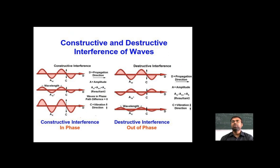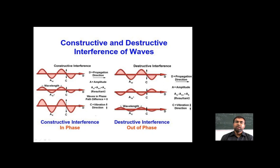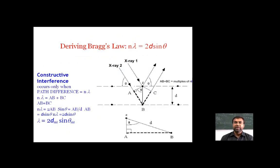Before moving on, we need to define interference. There are two types of wave interference: constructive and destructive interference. The propagation direction and amplitude illustrate both types — constructive interference and destructive interference can be seen in the corresponding waveforms.